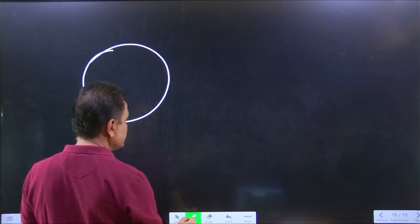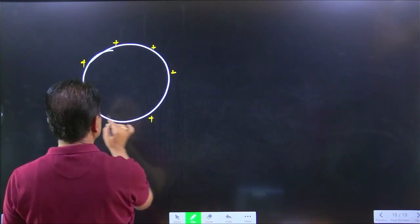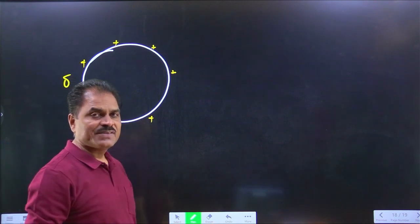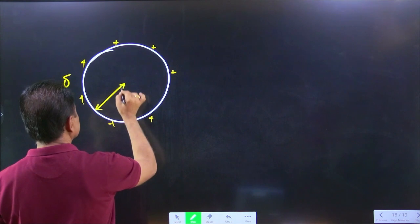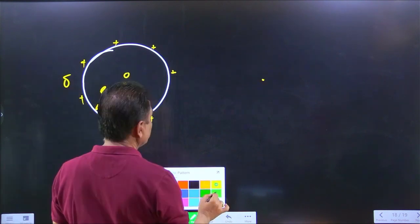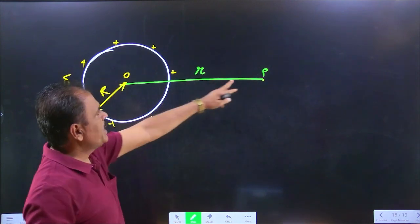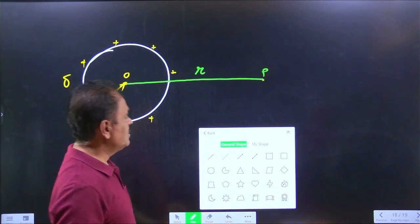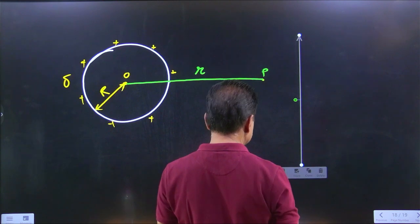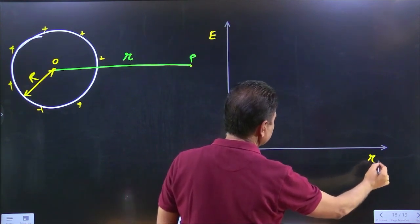So now we have a spherical conductor. We have a charge, we have a surface charge density sigma, and radius capital R. Now, we have to take intensity here and distance here.